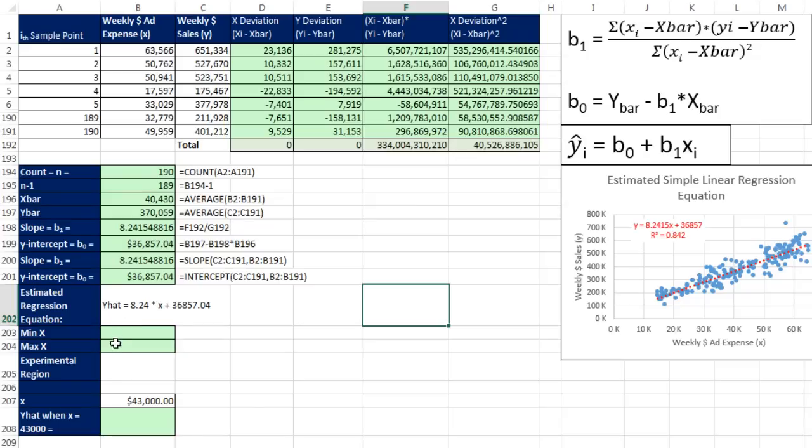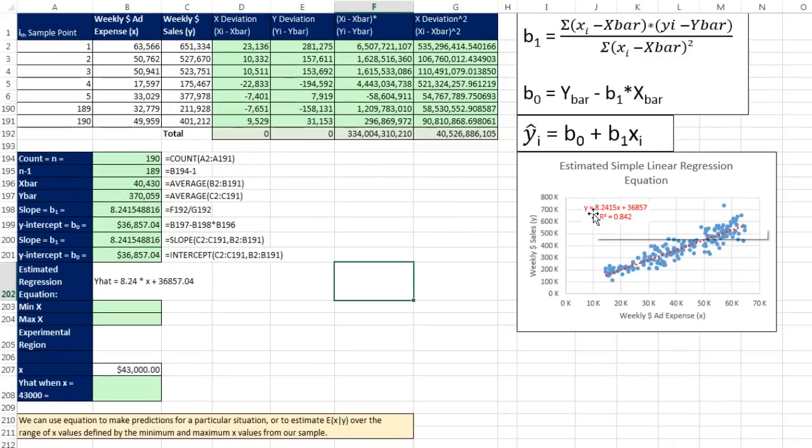That means we have our estimated regression equation: y hat equals 8.24 times x plus 36,857 and 4 pennies. That slope, and we can see over here, that slope's right there, $8.24 means our estimated equation predicts for every $1 increase in ad expense, weekly sales will go up by $8.24. Now the y-intercept, sure, it's where if we were to throw x of 0 into this, the line would cross right there. But we're never going to do that, because our sample data has a min and a max, and that value is way outside what's called the experimental region. Since we have our sample data here, that's the only evidence we have. We have no idea what this relationship might do outside this range in either direction. So we want to keep our predictions only between the min and the max of our x values.